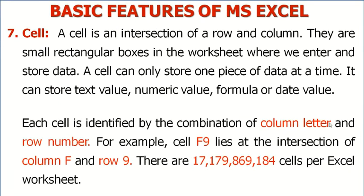Each cell is identified by the combination of column letter and row number. For example, column E and row 5. Cell F9 lies at the intersection of column F and row 9. Altogether we have 17,179,869,184 cells — that is a lot of cells per Excel worksheet.